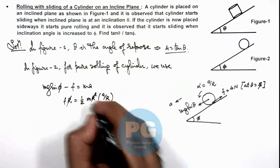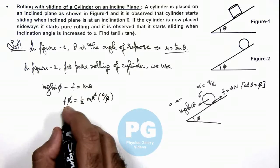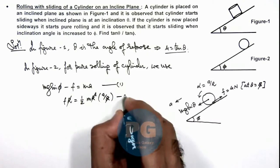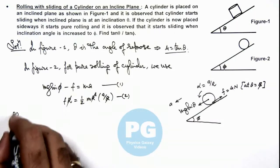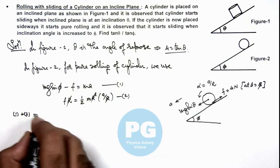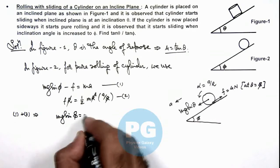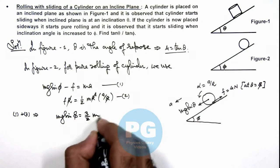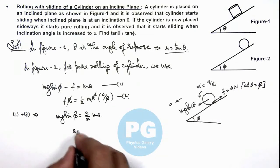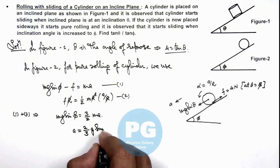Here r gets cancelled out and adding these 2 equations, if this is 1st equation this is 2nd, then 1 plus 2 will result mg sine phi is equal to 3 by 2 m ay. And this is giving us the value of acceleration is equal to 2 by 3 g sine phi.